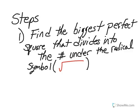We're going to break this up into a couple steps. Step 1: Find the biggest perfect square that divides into the number under the radical symbol. Please pause the video and copy this step in your notes.